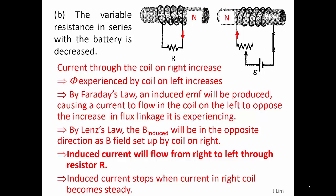As the current through the coil on the right increases, the flux experienced by the coil on the left increases. By Faraday's law, an induced EMF will be produced, causing a current to flow in the coil on the left to oppose the increase in flux linkage it is experiencing.